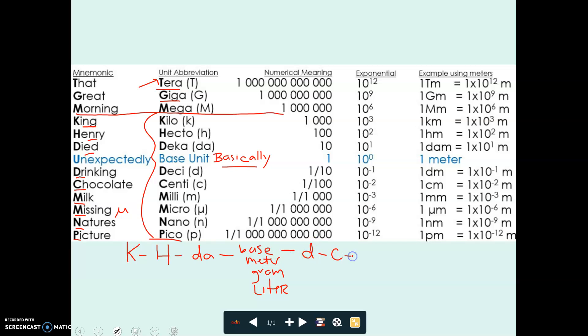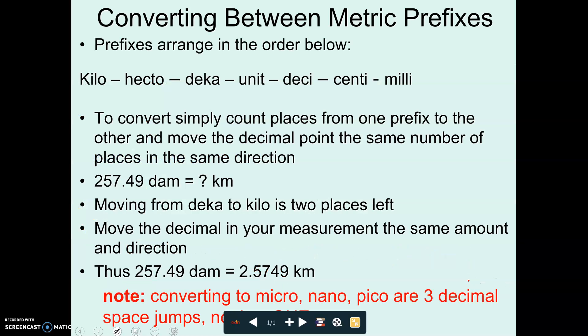Those are the three we typically are using in science. These are the base units by themselves. Drinking chocolate milk. Missing, remember that's mu, nature's picture. This is our prefixes from the biggest prefix, this represents the largest amount, to the smallest prefix. Pico, represents the tiniest amount. These are the metric prefixes in order. I'm going to show you how you can use this as a shortcut to do metric conversions.